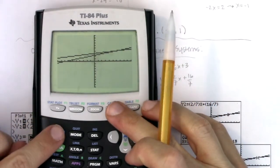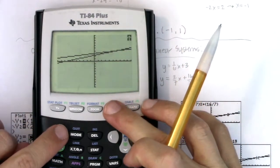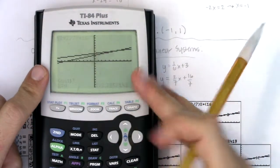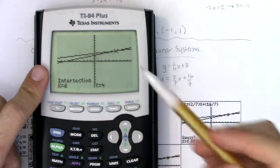But if you want to calculate where these graphs intersect, you hit second trace, option five, and then it's enter, enter, enter. And sure enough, they're popping back six, four. Okay,